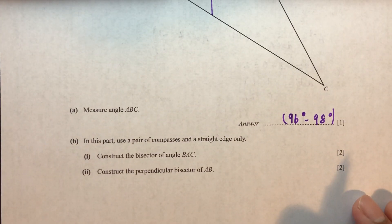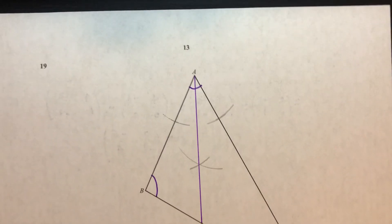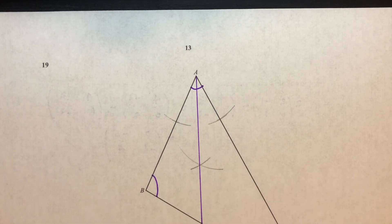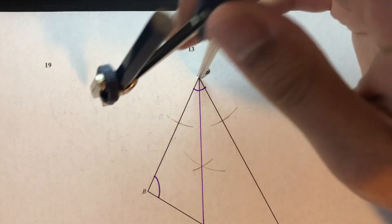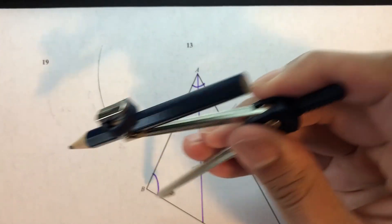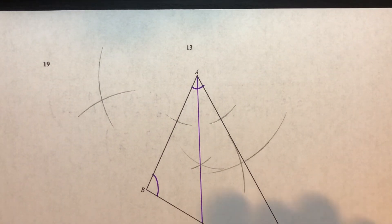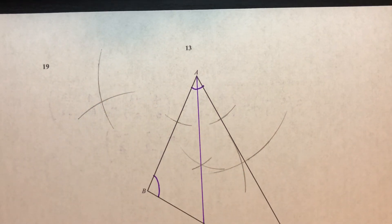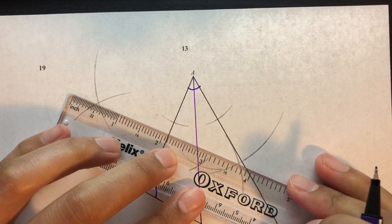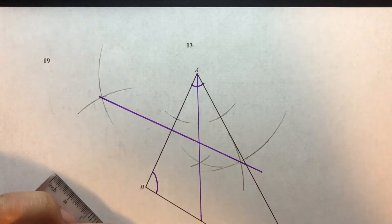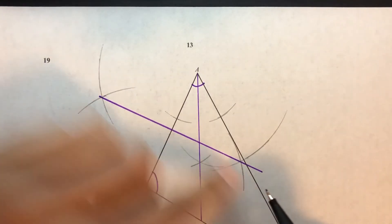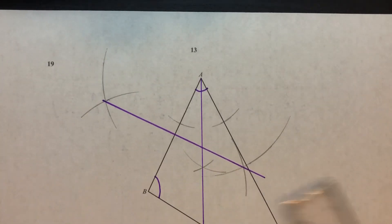Part two: construct the perpendicular bisector of line AB. Take the compass and go to point A, making arcs above and below the line. Then go to point B and make arcs above and below the line. The two arcs intersect at two points — join them. That line is the perpendicular bisector of AB.